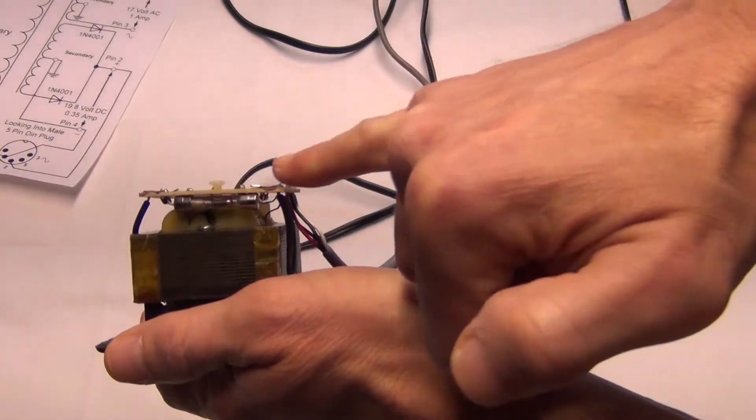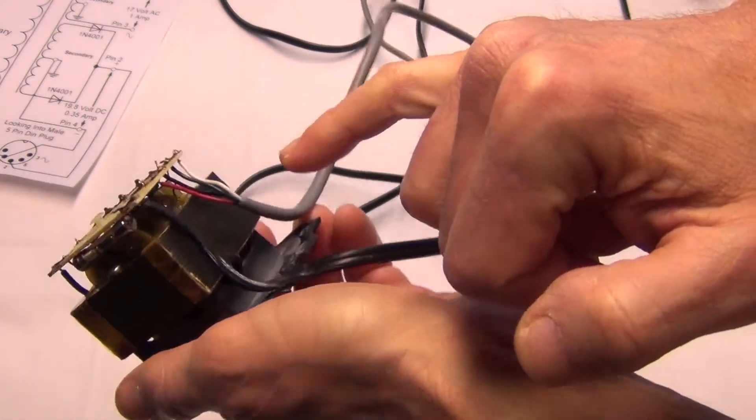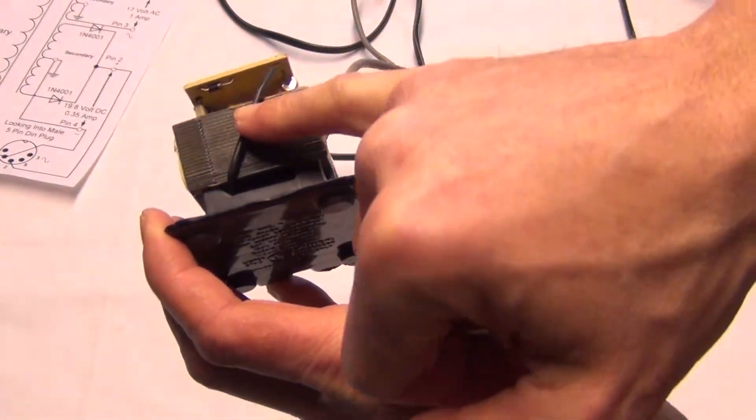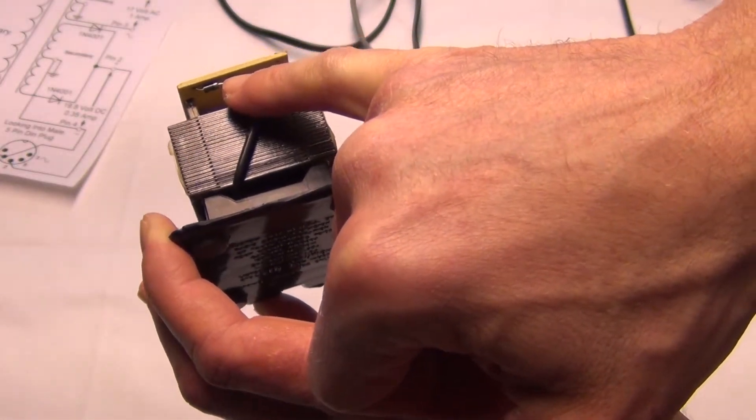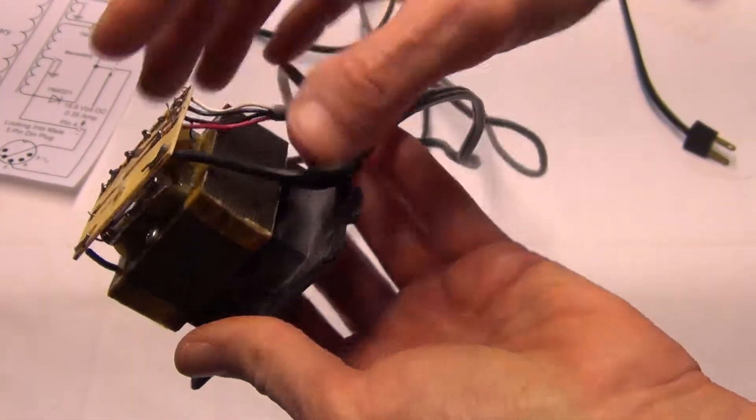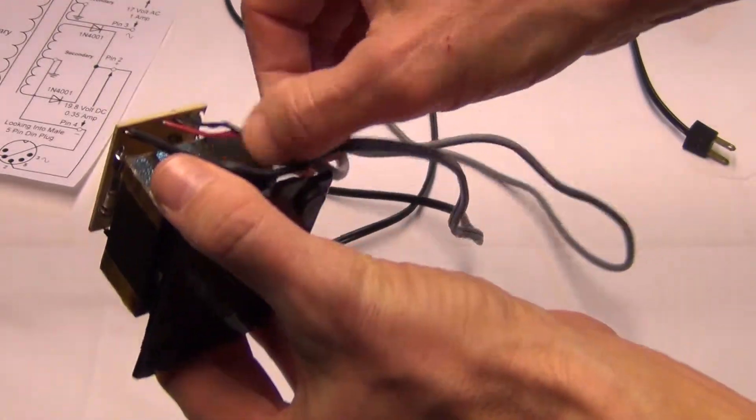You can see a fuse right in here. You can see one diode. It's actually a 1N4001 one amp diode. And then there's another diode.